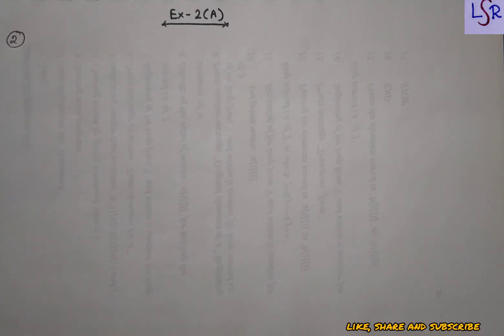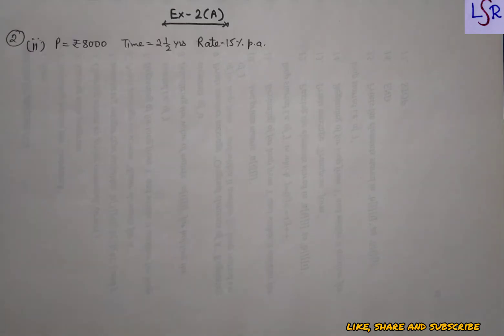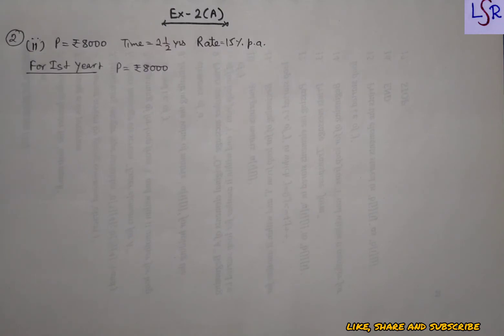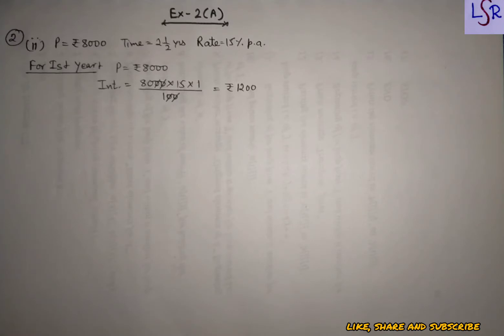Now let's start with the exercise. Question number 2, second part: calculate the amount and the compound interest on rupees 8000 in two and a half years at 15 percent per annum. Here principal is 8000, time is two and a half years, and rate is 15 percent. For the first year, principal is 8000, interest comes to 1200, and the amount is 9200.